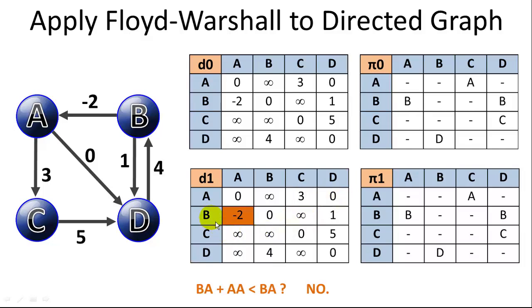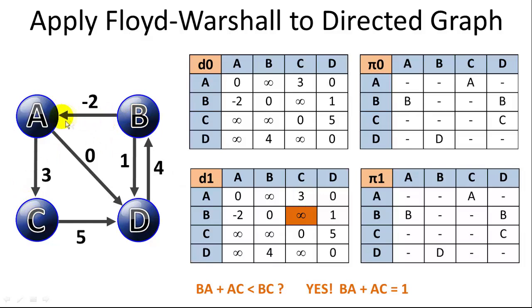Here it gets interesting. We're going from B to C and we can stop at A — so we go B to A (negative two) and then A to C (three), giving a total of one. Since B to C was previously infinity (no direct edge), we now populate one in the table with predecessor A. Similarly for B to D: B to A is negative two, plus A to D is zero, giving negative two. We populate that with predecessor A.